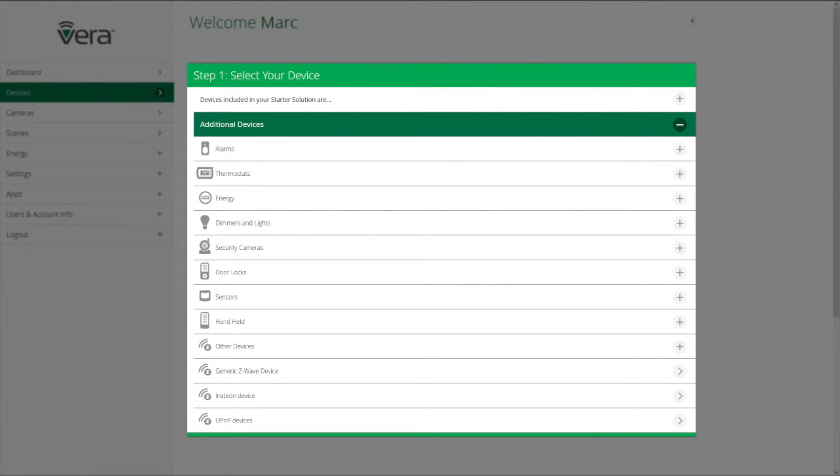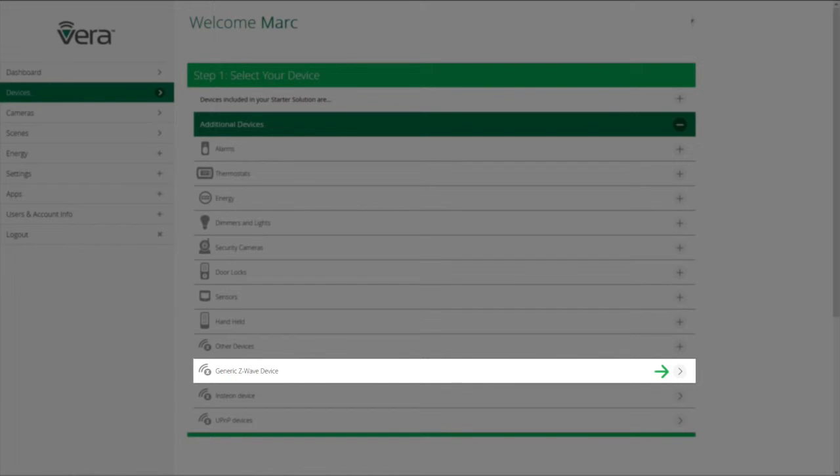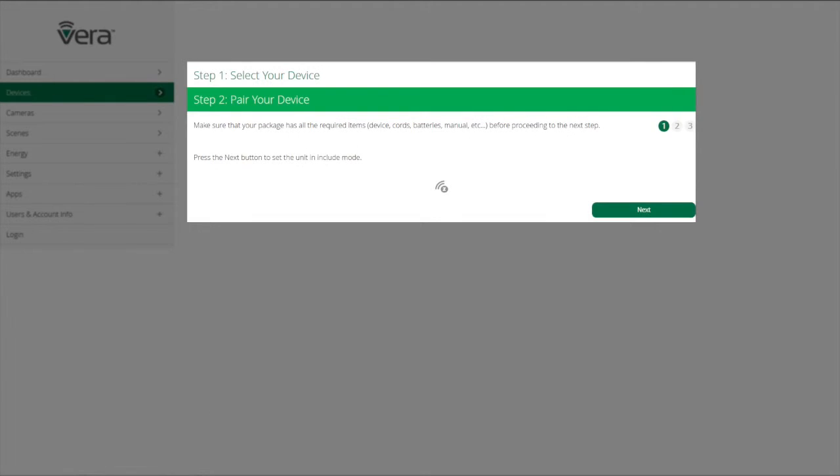Now if the device that you're connecting to your Vera Control network is not listed in the user interface, you're going to click on Generic Z-Wave Device to add this device. And again, we're going to follow the instructions on the screen and click Next.